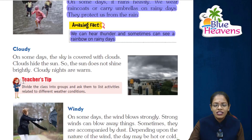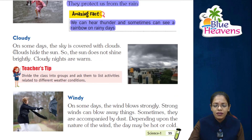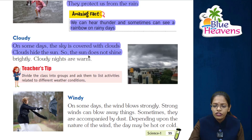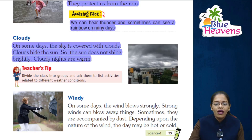Next weather is cloudy. On some days the sky is covered with clouds. Clouds hide the sun, so the sun does not shine brightly. Cloudy nights are warm.